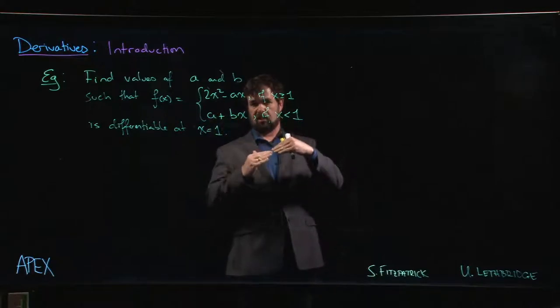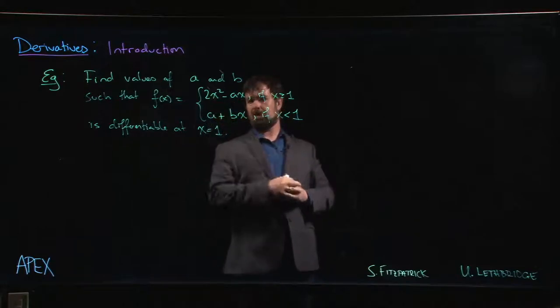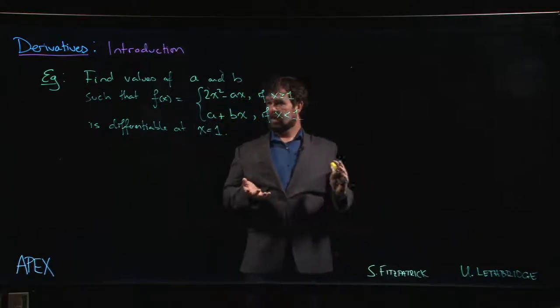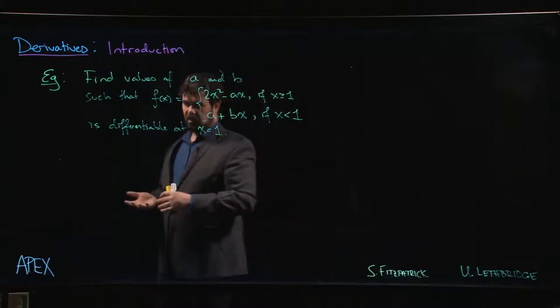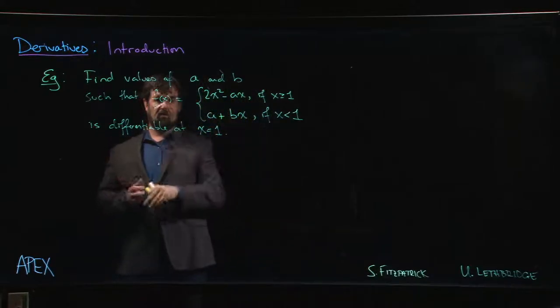is adjust the slope and the intercept of that line so that it's going to match up with the graph when x is bigger than or equal to 1 in such a way that our function is differentiable at the point where we transition from one formula to another.